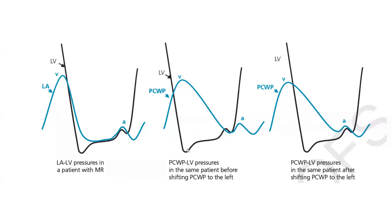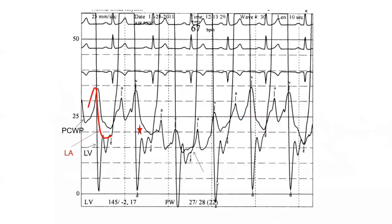Here is a case of pure mitral regurgitation with no mitral stenosis at all. Looking at the wedge pressure versus LV pressure in diastole, it appears there is no diastasis and a mitral gradient — but if you look carefully there is intermittent diastasis, implying no significant valvular impedance. The true LA pressure shows absolutely no gradient between LA and LV, whereas the wedge pressure created a fake gradient — because of the big V-wave. The more prominent the V-wave, the faker that wedge pressure gradient becomes.